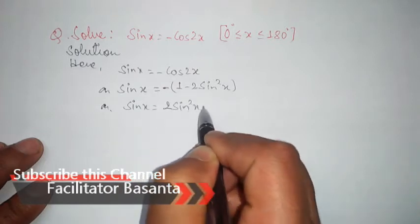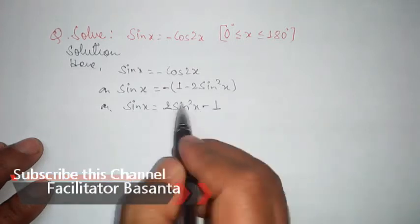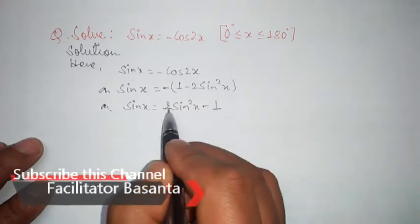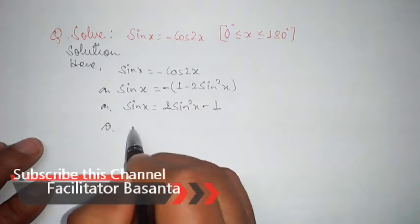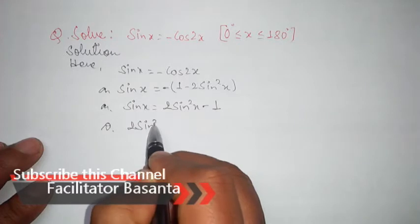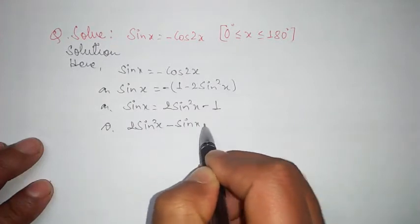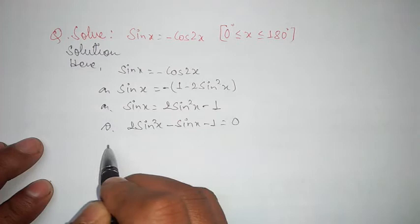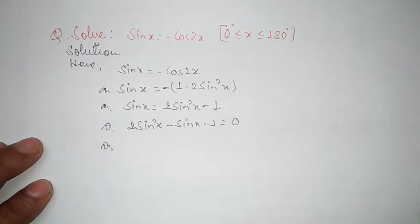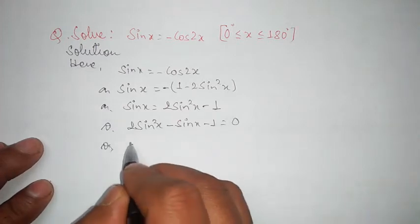Take sin x to the right side. What you will get is 2 sin square x minus sin x minus 1 equals 0. Now we will factorize.